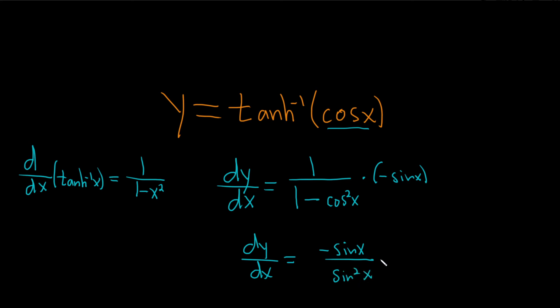So this cancels here, so you get negative 1 over sin, which is actually just negative cosecant of x, and that would be the final answer.